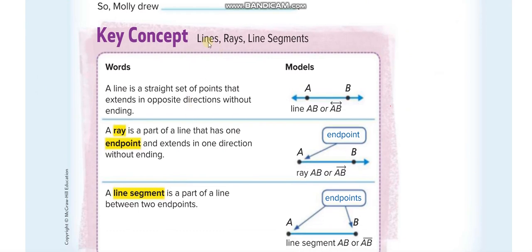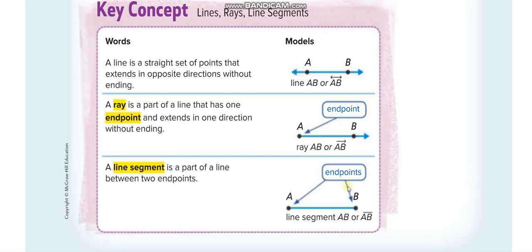A line has two arrows, one on each side. A ray has just one arrow on one side and an endpoint on the other side. And the third thing we have is line segments.